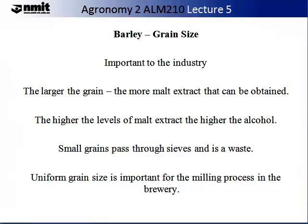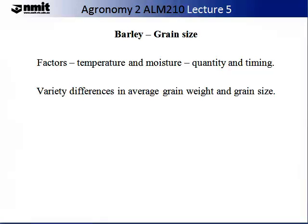Grain size is another payment component to the industry and reflects its importance. The larger the grain, the more malt extract that can be obtained. This is important because the higher the levels of malt extract, the higher the alcohol content that results. Small grains pass through sieves and are not used in the brewing process and are therefore a waste. Uniform grain size is also important for the milling process in the brewery. There are predominantly three factors which affect grain size: climatic inputs of temperature and moisture, particularly the quantity and timing of both parameters.